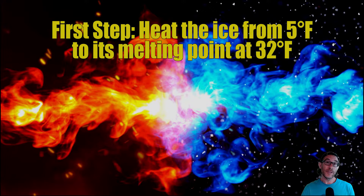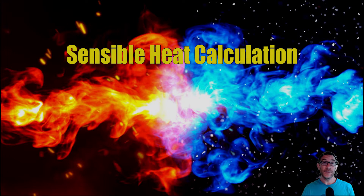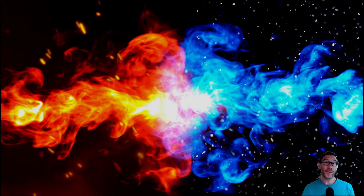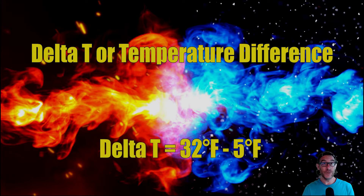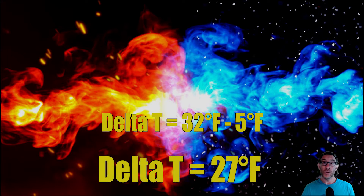First step: let's take this block of ice, which is at 5 degrees Fahrenheit, and heat it up to its melting point at 32 degrees Fahrenheit. This is a sensible heat calculation. First, we need to figure out the delta T, or the difference in temperature. So I take 32 degrees Fahrenheit and subtract 5 degrees Fahrenheit — I need to heat up this block of ice 27 degrees to get it to its melting point.